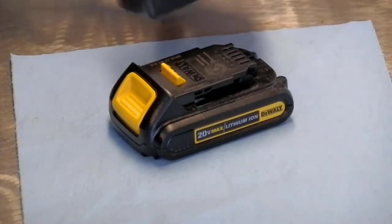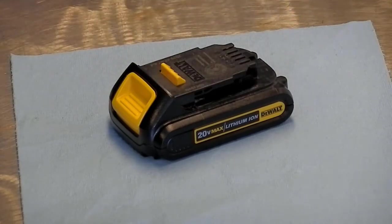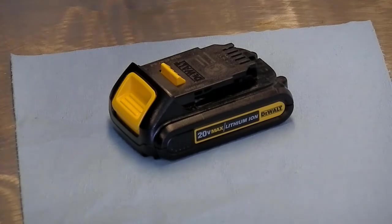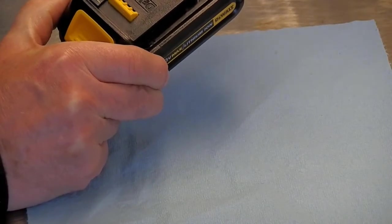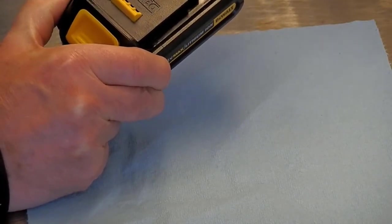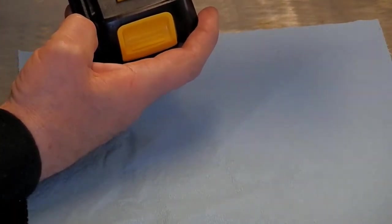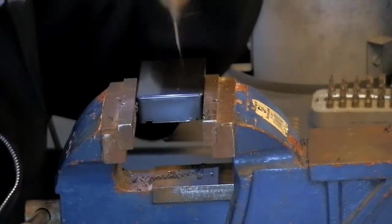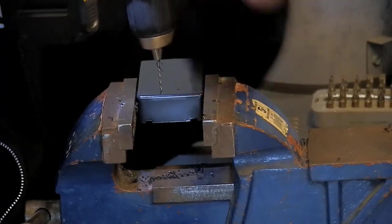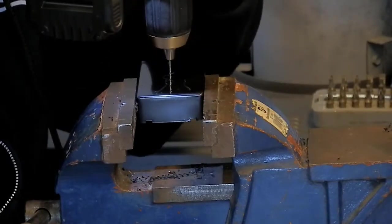And the first place to start is making a slot to accept this latch. If I measure from this stop, it's about a half inch center, about a quarter inch wide, and roughly an inch long. And another one in the middle here to make it easier - quarter inch drill bit.